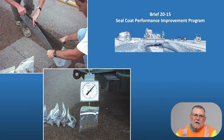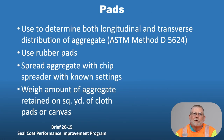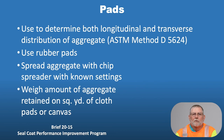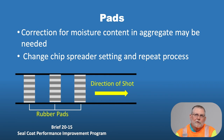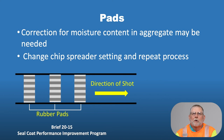Using pads to determine the longitudinal and transverse distribution of rock is from ASTM Method D5624. It uses rubber pads — lay these down, spread the aggregate with the chip spreader at known settings, and then weigh the amount of rock retained on those pads, the same as if you use cloth or canvas. You may need to correct for moisture in the aggregate depending on how long it has been in the stockpile and weather conditions. Change your chip spreader setting and retry as needed.